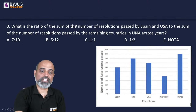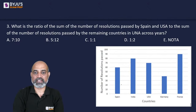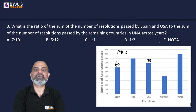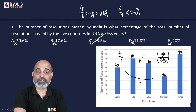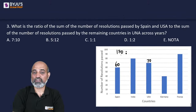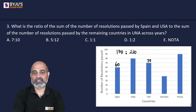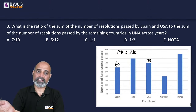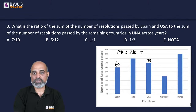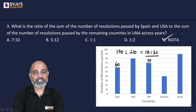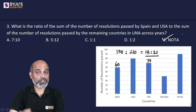Next: what is the ratio of the sum of resolutions passed by Spain and USA to the remaining countries? Spain is 60 and USA is 70, giving 130. From the first question, the total was 340, so the remaining is 340 − 130 = 210. The ratio is 130:210 = 13:21, which is none of the given options. So the answer is E, NOTA — none of the above.